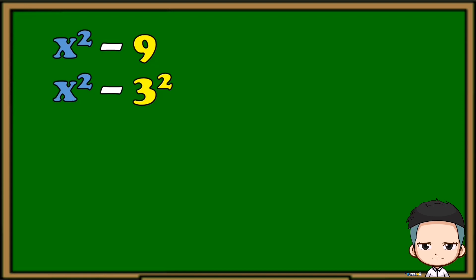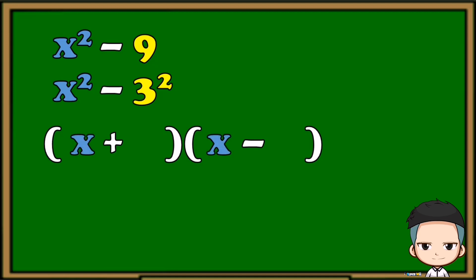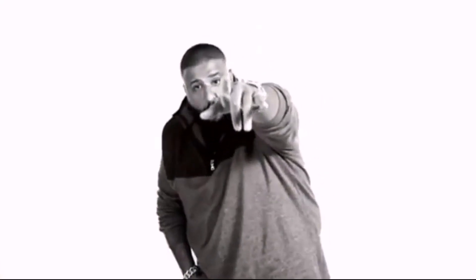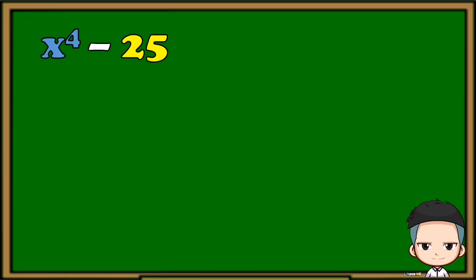That is x squared minus 3 squared. Next, to make it easy, prepare these parentheses with operations, then just copy the base of the first term and copy the base of the second term. Make sure you know where you copy the bases. Our final answer is the quantity of x plus 3, multiplied by the quantity of x minus 3.